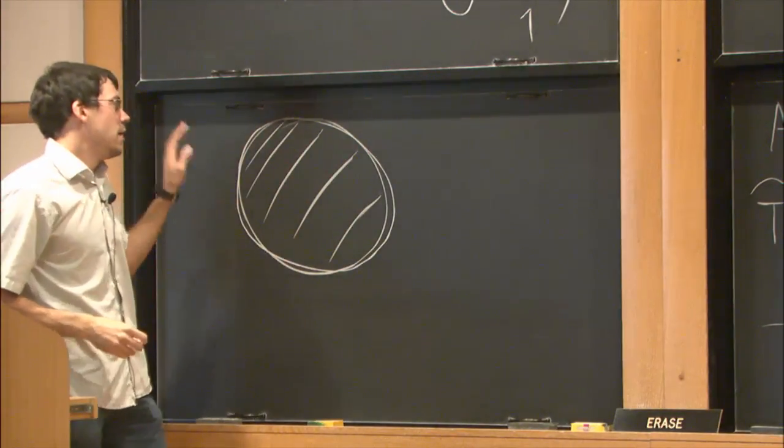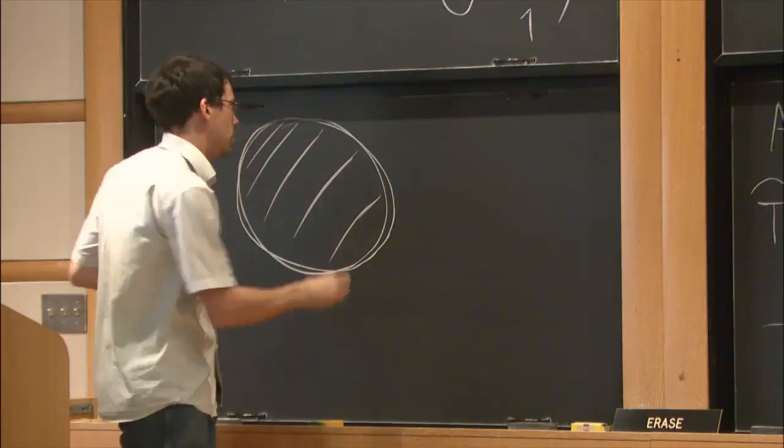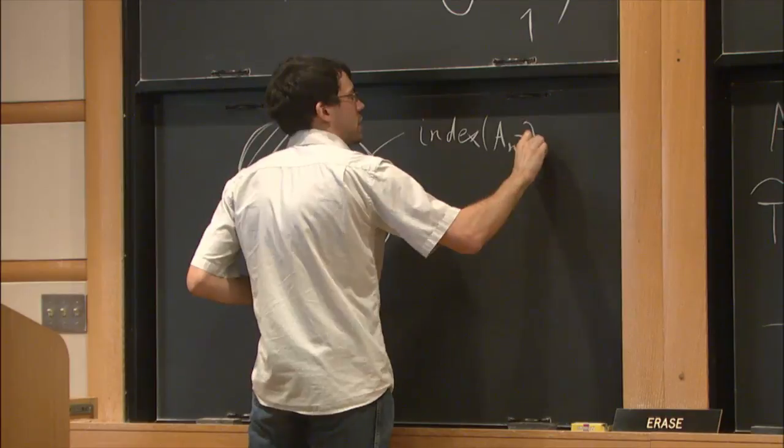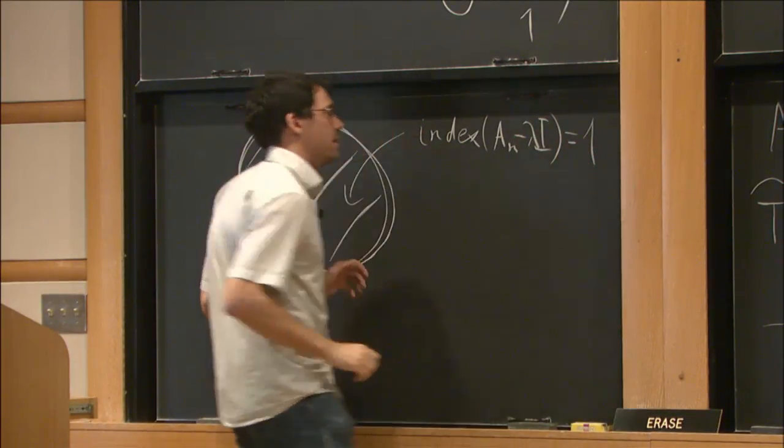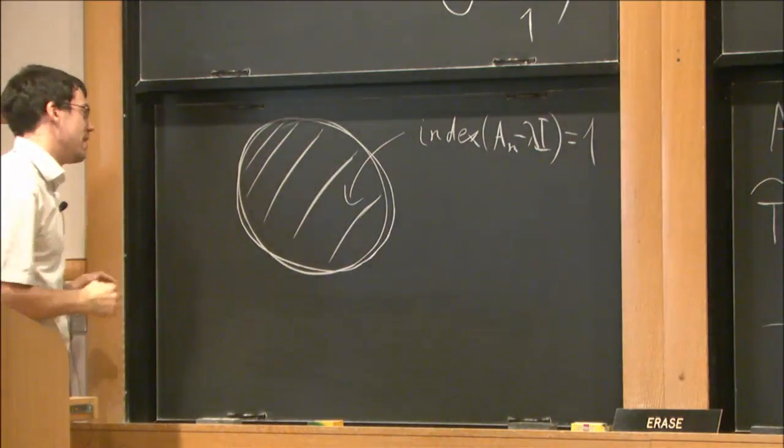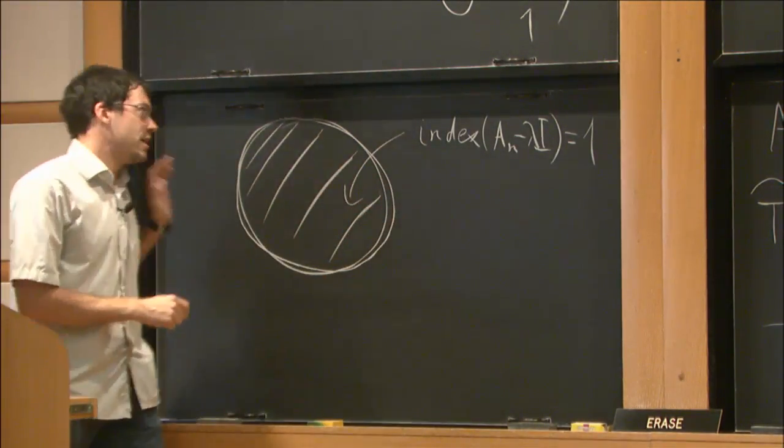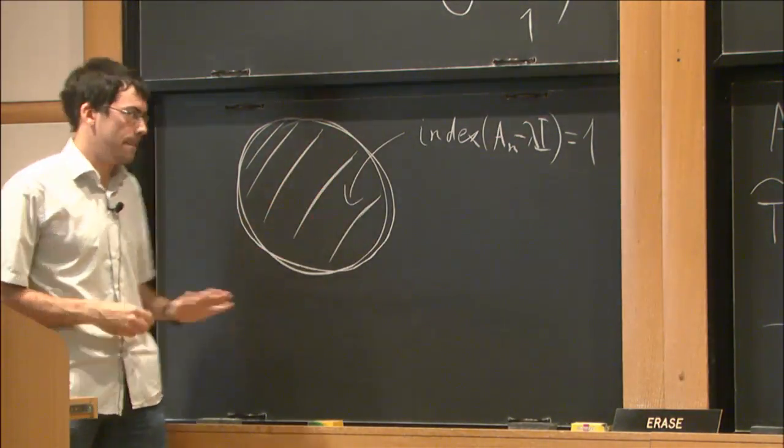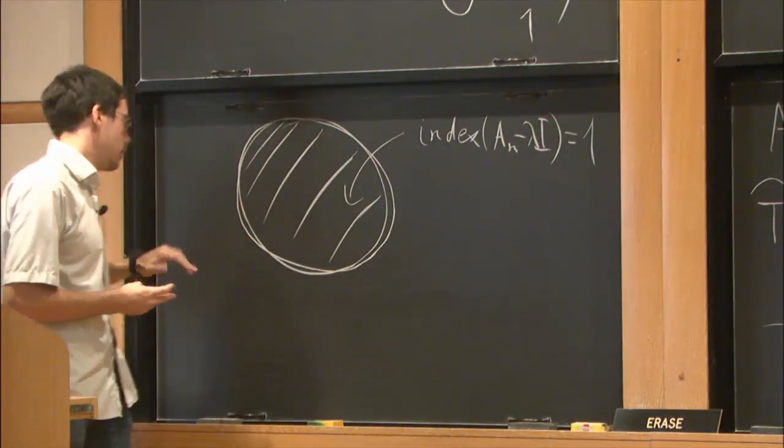Inside of this disk you can compute the Fredholm index. So index of a_n minus lambda identity equals actually one, I think, or minus one—I always confuse—but anyway, index is not zero. This is an obstruction because you cannot destroy non-trivial index by perturbation of norm less than the distance to essential spectrum. This only happens in infinite dimensions because there is no essential spectrum in finite dimension.